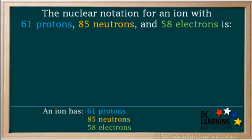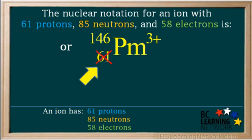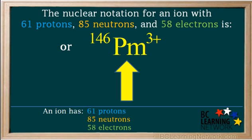So the nuclear notation for an ion with 61 protons, 85 neutrons, and 58 electrons is this. Sometimes a nuclear notation can also be written without showing the atomic number on the bottom left, which would be like this. Both of these notations are correct.